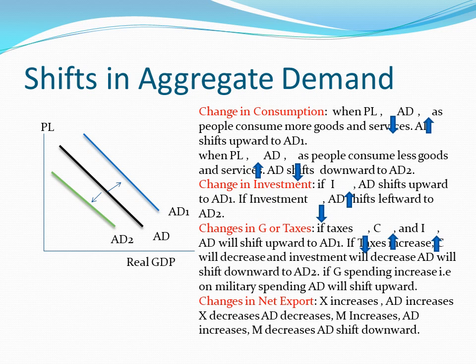The third point is changes in government spending or taxes. If taxes decrease, consumption and investment will both increase, so the aggregate demand curve shifts upward to AD1. In the reverse situation, if taxes increase, consumption and investment decrease, so the aggregate demand shifts downward to AD2. For government spending: if government spending increases — for example, the government is buying more aircraft or spending on military — the aggregate demand curve shifts upward from AD to AD1.